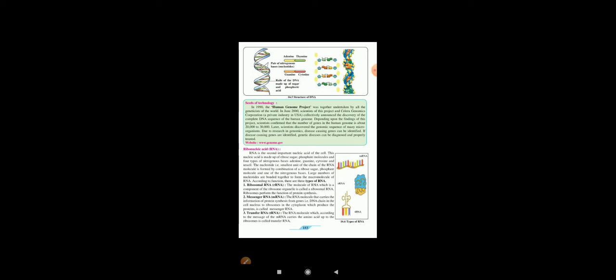First, ribosomal RNA, that is rRNA. The molecule of RNA which is a component of the ribosome organelle is called ribosomal RNA. Ribosomes perform the function of protein synthesis. Second, messenger RNA, mRNA. This RNA molecule carries the information of protein synthesis from genes, that is DNA chain, to the cell nucleus, to ribosomes in the cytoplasm which produce the proteins. This is called messenger RNA. Now, transfer RNA or tRNA. The RNA molecule which according to the message of the mRNA carries the amino acids up to the ribosomes is called transfer RNA.